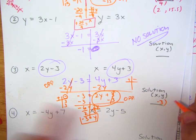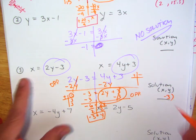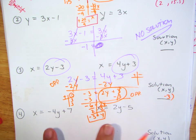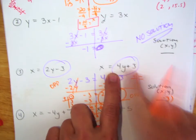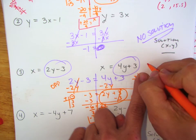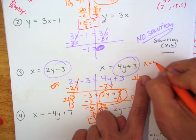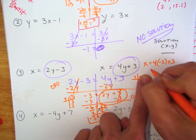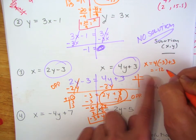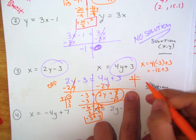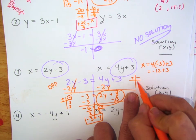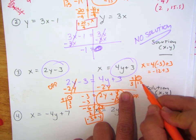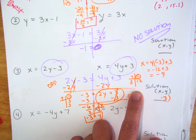My y is negative 3. Now for x, I can plug into whichever equation. I'm going to use the right one. So x equals 4 times negative 3 plus 3. That's negative 12 plus 3. Doing the T-chart: negative wins by 9, so x equals negative 9.